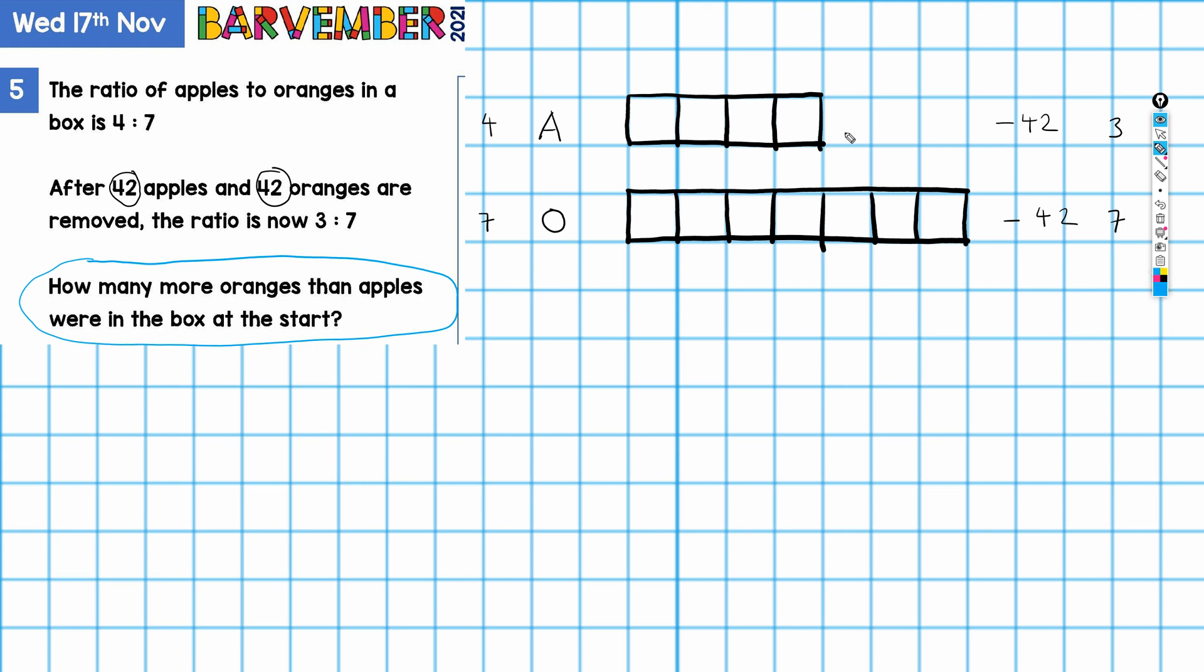But right, so each of them, we lose 42. And we start with four to seven, and we want to go to three to seven. So that's just my note to remember. And what is the question? Well, the question is this, what's the difference here at the start? So that's our question mark. Okay.